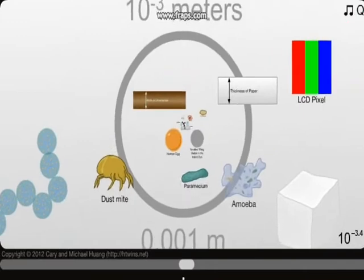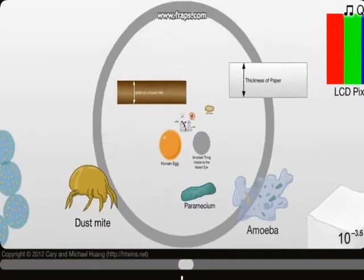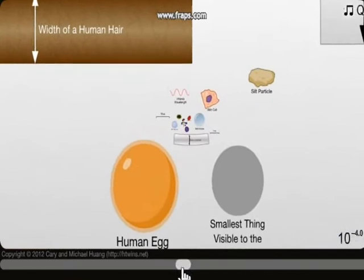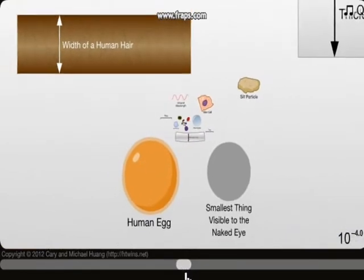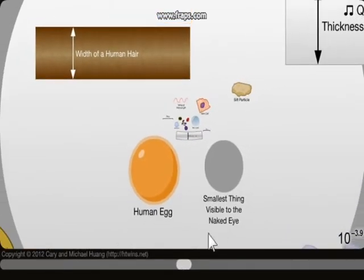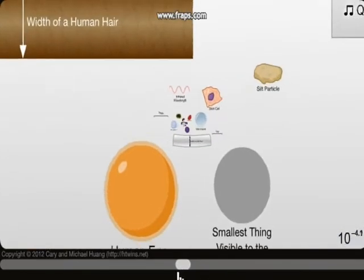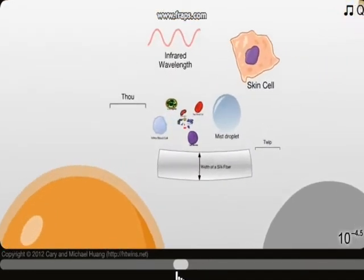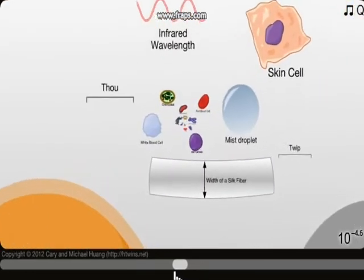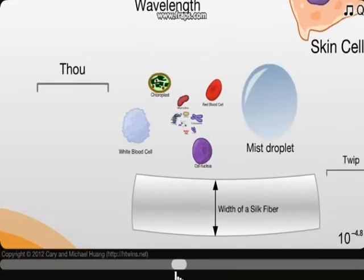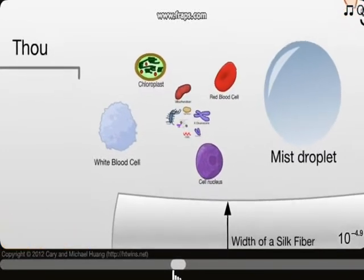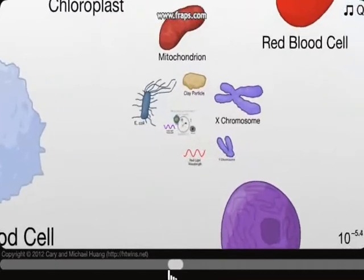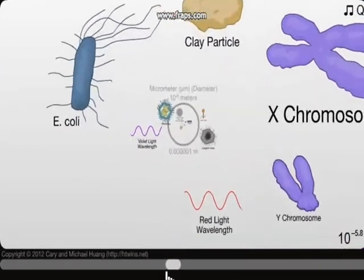Millimetres — okay: grain of salt, grain of sand, LCD pixel, amoeba and dust mite. Okay, we're getting to the ugly stuff now. Paramecium. Human egg — smallest thing visible to the naked eye, whatever it is. Silk particle. Skin cell. Width of silk fiber, mist droplet.